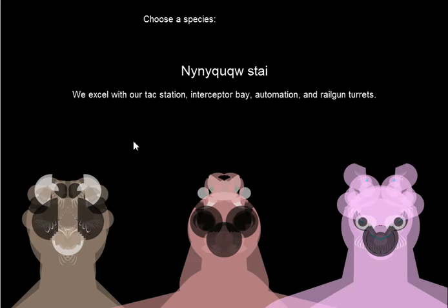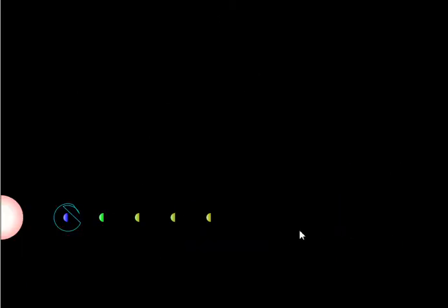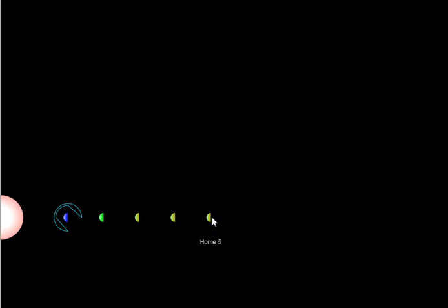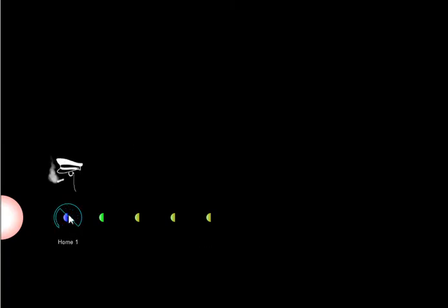The options menu doesn't do anything. Pick whichever species you want. And here, you can click on any planet you want, but none of them have any colonies on them except for the first one.